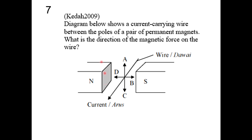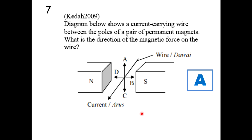Question 7: a current-carrying wire between the poles of a permanent magnet — current going up, north-south field. Using Fleming's left-hand rule, the answer is A: the magnetic force is going upward.